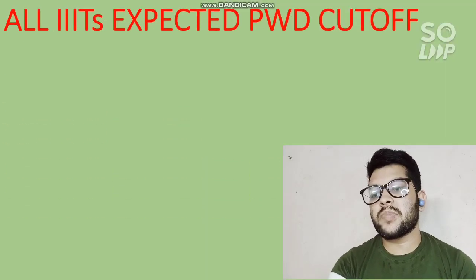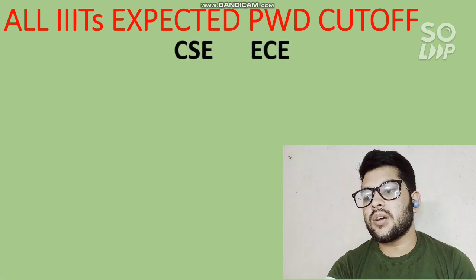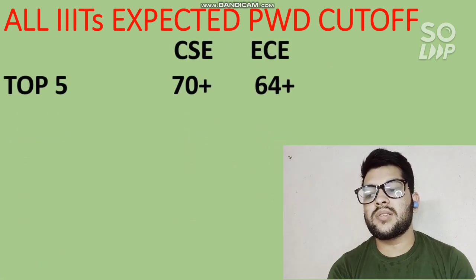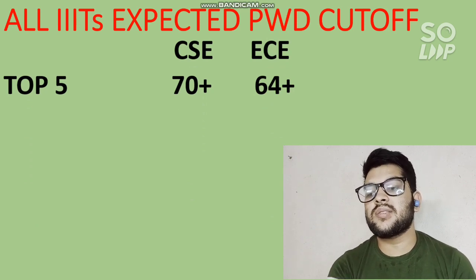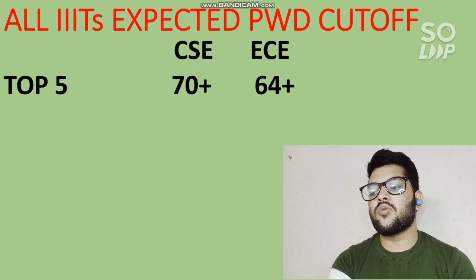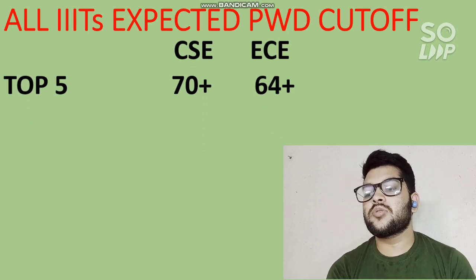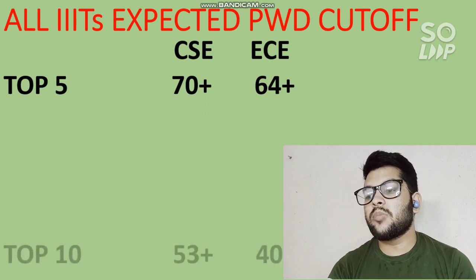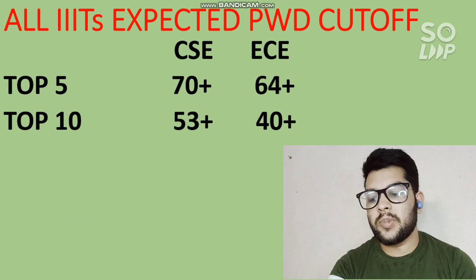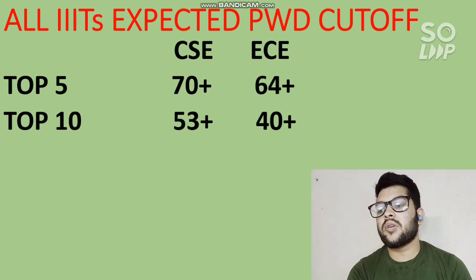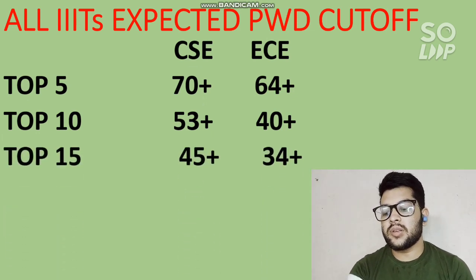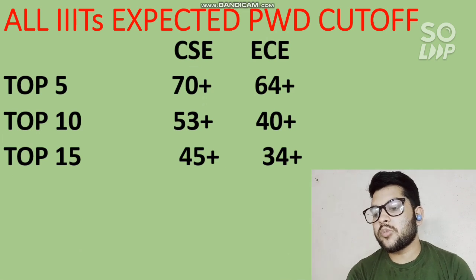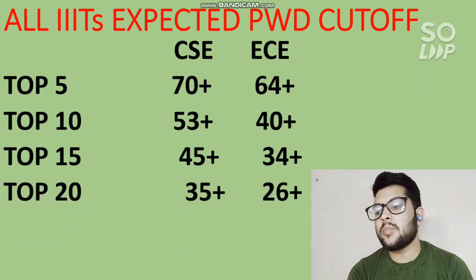Now for all Triple-IT expected PWD cutoffs. Triple-ITs mostly have only CS and EC branches, sometimes IT as well, so I am considering CS and EC. For top 5 Triple-ITs: CS requires 70+ percentile and EC requires 64+ percentile. For top 10: CS requires 53+ percentile and EC requires 40+ percentile. For top 15: CS requires 45+ percentile and EC requires 34+ percentile.